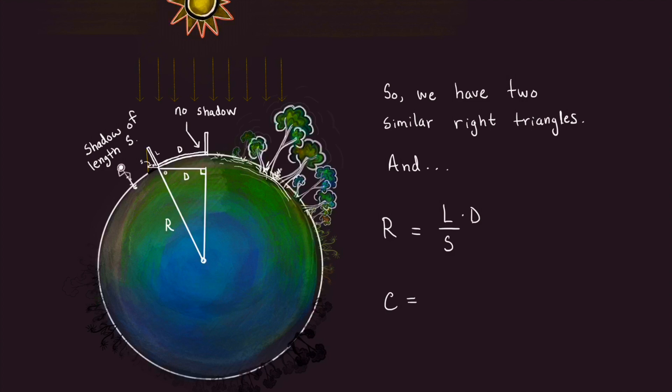Of course we can also get the circumference of the planet, 2πr. Substituting for r, we get C = 2π × L × D / S.